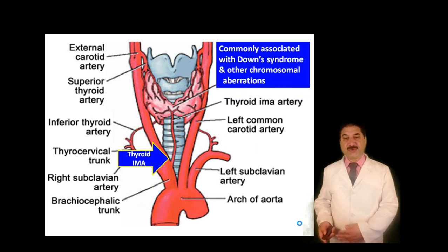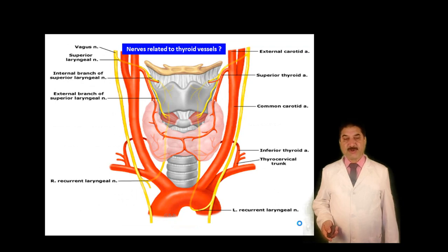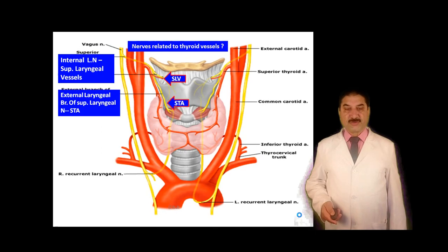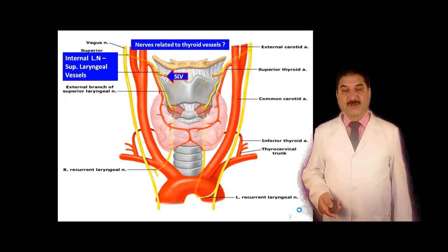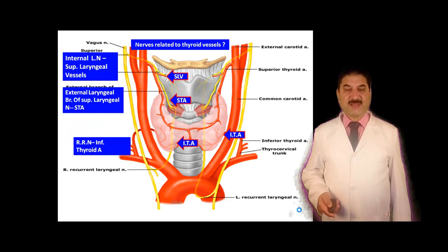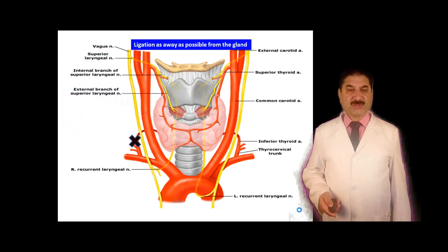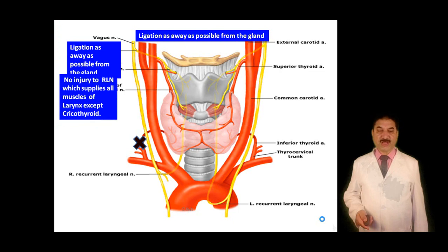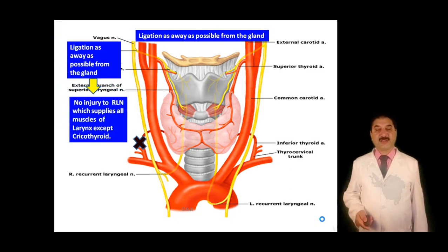Now let us look at the nerves related to thyroid vessels. The internal laryngeal nerve, a branch of the superior laryngeal nerve, is related to the superior laryngeal vessels and supplies mucosa of the larynx above the vocal cords. The superior thyroid artery is related to the external laryngeal branch of the superior laryngeal nerve. The recurrent laryngeal nerve is related to the inferior thyroid artery. We should ligate both superior and inferior thyroid arteries as close as possible to the gland, to prevent injury to the recurrent laryngeal nerve and avoid hoarseness of voice and difficulty in breathing.